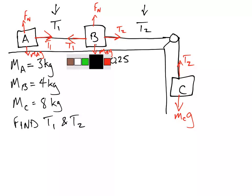Let me do that in a different color so that it stands out. So we've got friction now in this direction, and that is force of friction B, and we've got friction here as well, and this is force of friction A.